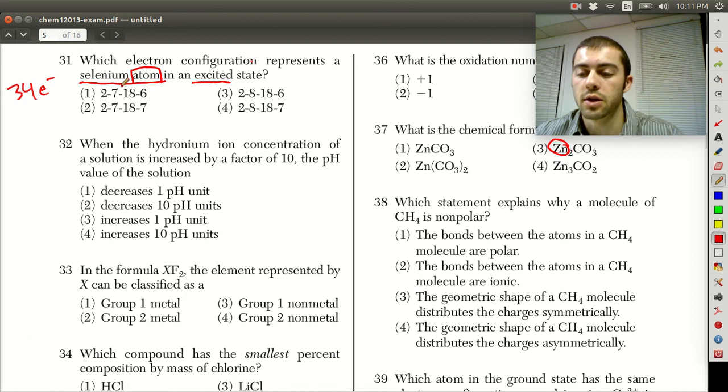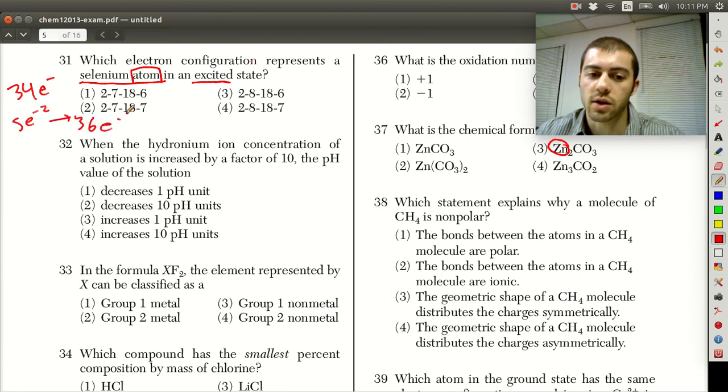If it were a selenium atom, then there would be... if it were a selenium ion, that would mean we would have more electrons than 34. Selenium would generally form a minus 2 ion, so the selenium minus 2 ion would have 36 electrons. But this is very specifically an atom, so that means we must have 34 electrons.